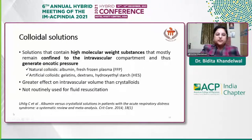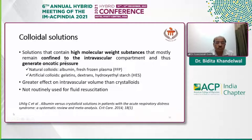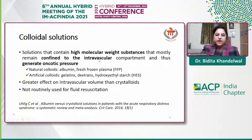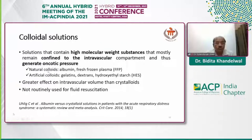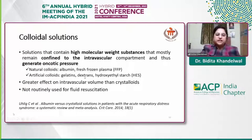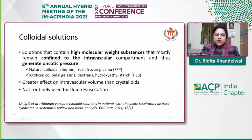On the other hand, colloid solutions contain high molecular weight substances mostly confined to the intravascular compartment, thus generating oncotic pressure. The natural ones are albumin and FFP, and the artificial colloids are gelatins, dextrans, and hydroxyethyl starch. These colloids have a greater effect on intravascular volume compared to crystalloids, but for fluid resuscitation they are not routinely used, and there are reasons for that.